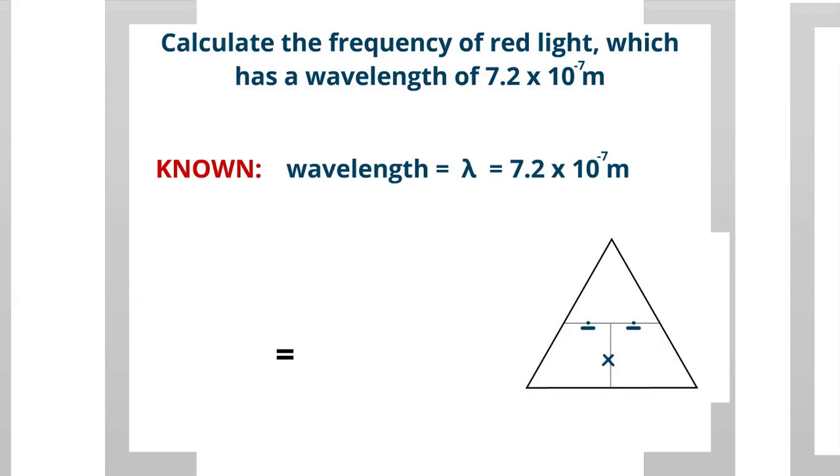The speed of light, we always know, which is 2.998 times 10 to the 8th meters per second. That's always going to be that value because it's a constant. And our unknown is the frequency.